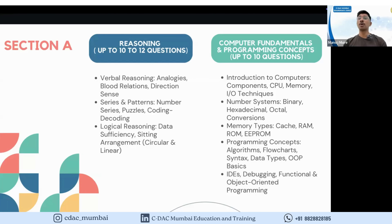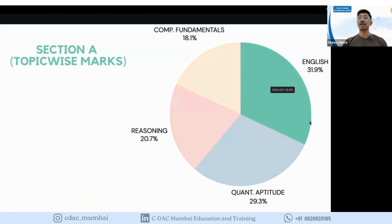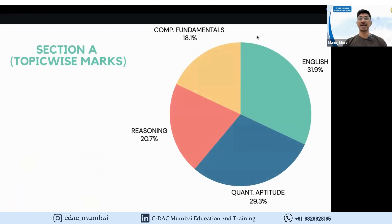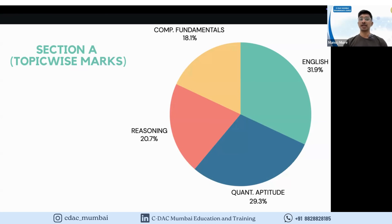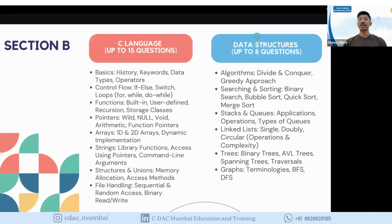Section A is a strong scoring section where English and aptitude will support you. It is more language and aptitude oriented, so students from non-CS branches should focus more here. Computer fundamentals and reasoning each carry around 20% weightage, while English and quantitative aptitude carry 30% each, so put more emphasis on those two.